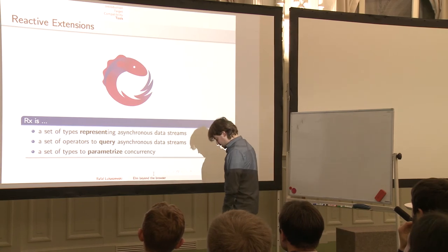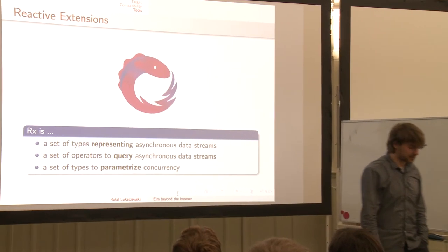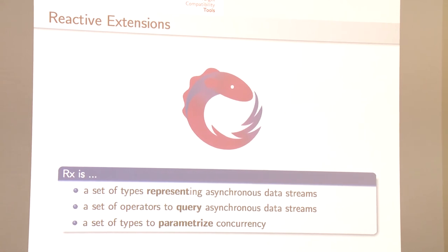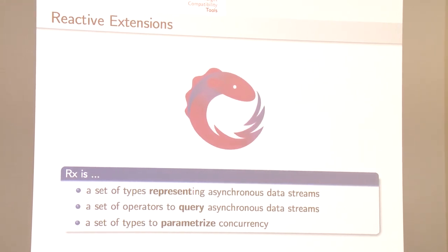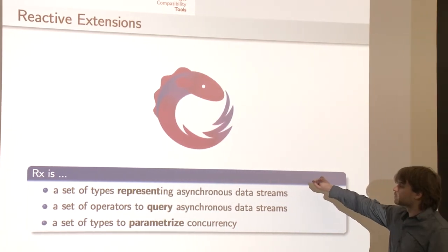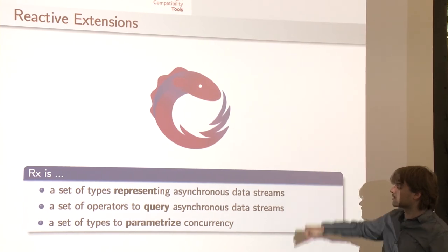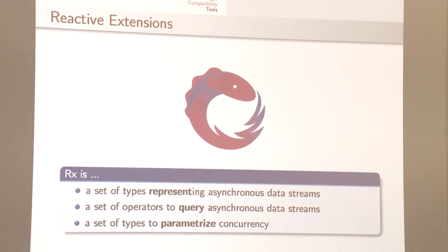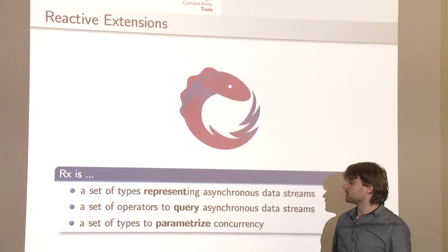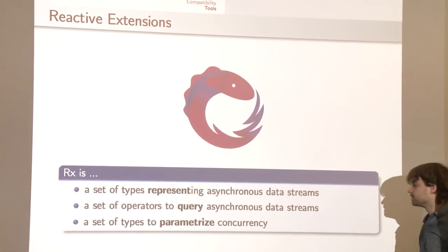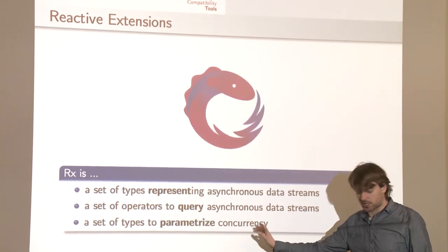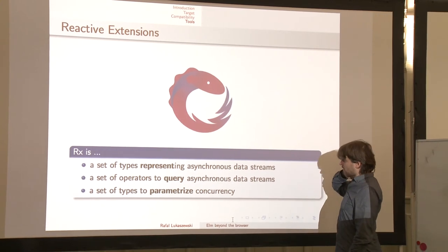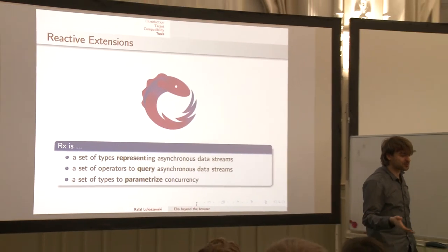Maybe some of you already know — there's something called Reactive Extensions in .NET. It's open sourced recently, which is a very good thing. It's a set of types representing sequence data streams — basically representing signals. There's additional LINQ query operators for those signals, and types to parameterize concurrency called schedulers. It's actually another approach to reactive programming in .NET.